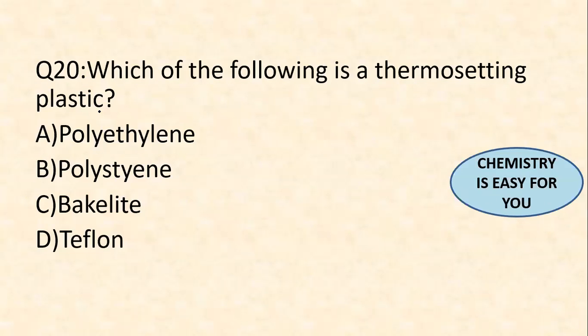The final question: which of the following is a thermosetting plastic? The options are polyethylene, polystyrene, Bakelite, and Teflon. The answer is option C — Bakelite. It is a cross-linked polymer made from phenol and formaldehyde — a phenol-formaldehyde resin — and is also known as a thermosetting plastic. Refer to previous videos for definitions of thermoplastic, thermosetting plastic, elastomers, and plasticizers.